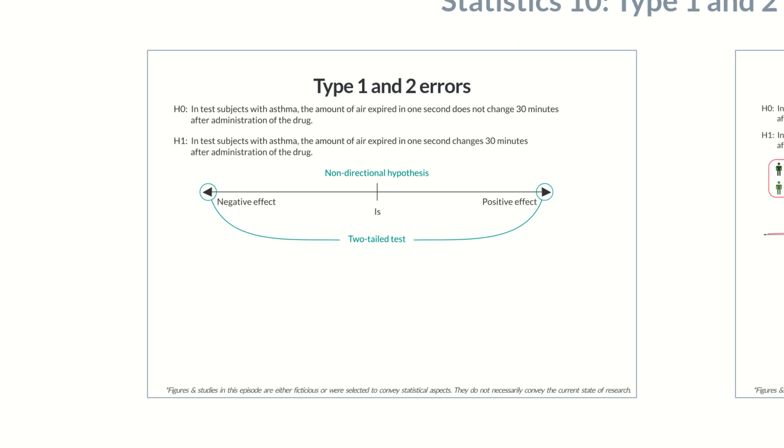In test subjects with asthma, the amount of air expired in one second increases 30 minutes after administration of the drug. Then we'd only look at the range of improved values and perform a one-tailed test. Such a hypothesis is also called a directional hypothesis.